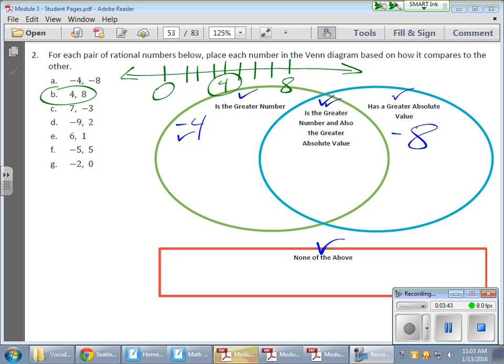The four, does it have a greater absolute value? No, because the absolute value of four is four, so it's not the greater absolute value. Is it the greater number and also the greater absolute value? Well, it's none of them, actually, which is down below. So that four goes here. Now let's take a look at this eight. It is the greater number. But does it have the greater absolute value? It certainly has that as well. So since it has both of those guys, it belongs in here for that number eight.